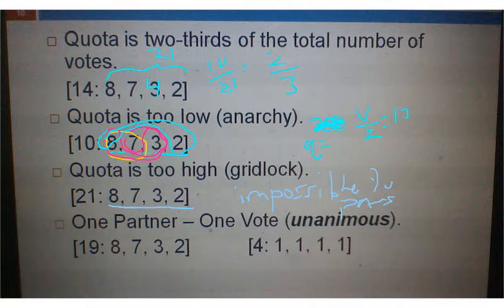And the last one on here is one partner, one vote. Which we're also going to call that unanimous for short. So we would need everyone's vote in order for this motion to pass. The one on the right is pretty easy.